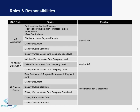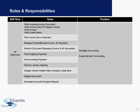Thirdly, there is the Treasury Admin, who is mainly responsible for matters related to payments, displaying data, managing bank master data, and displaying treasury reports. Next we have the AP Supervisor — a much higher role. This person is not just allowed to display documents in SAP but can post documents, post clearing, and handle reversal documents, payments, and generating Accounts Payable reports.